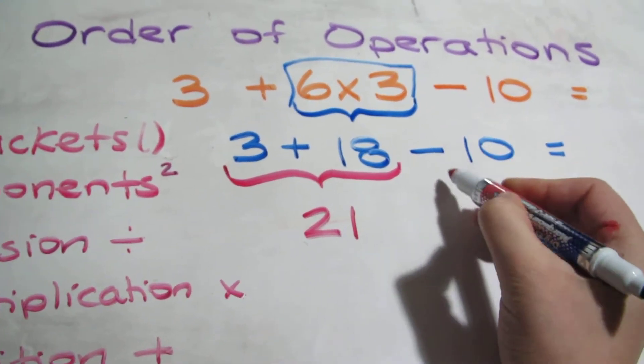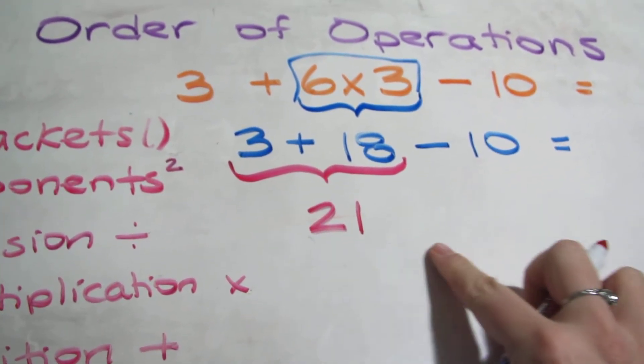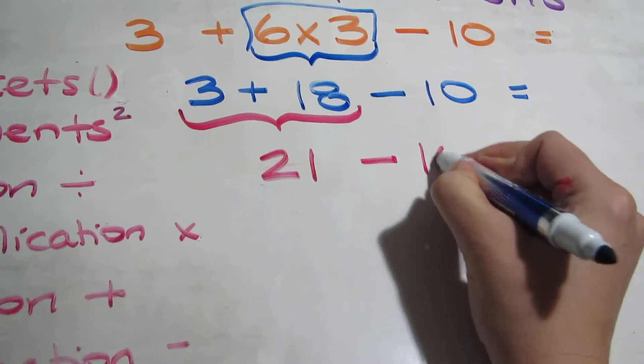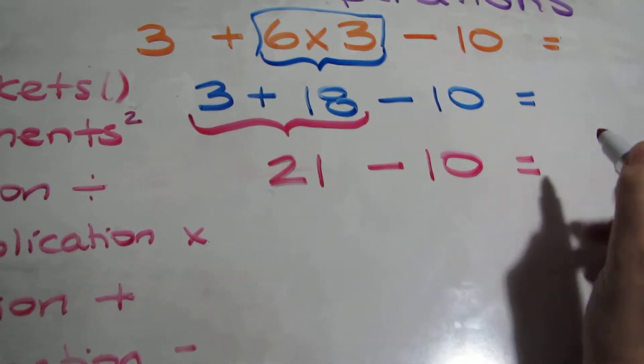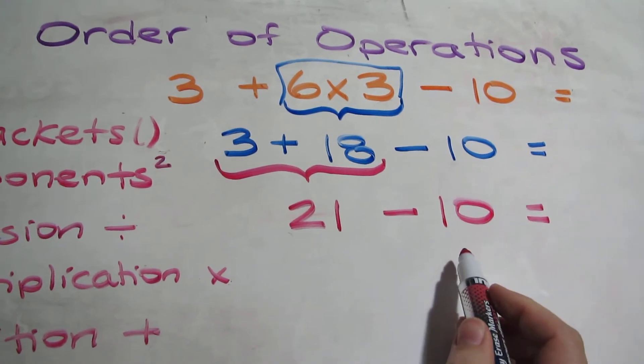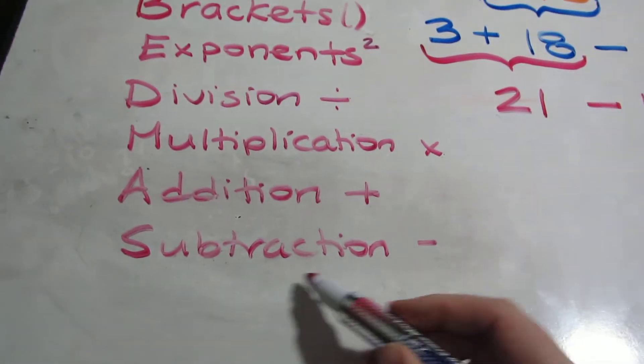I'm going to rewrite it down here at the bottom so it's all on the same line and nice and clear, with whatever I did not do. Now I'm left with a very simple equation, and it happens to be the last thing on the list: subtraction.